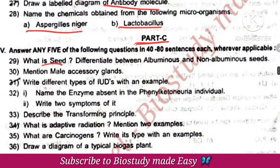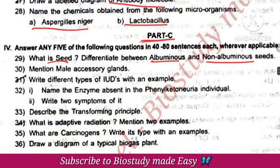Part C questions: What is a seed? Differences between albuminous and non-albuminous seeds. Male accessory glands include the seminal vesicle, prostate gland, and bulbourethral glands — I will tell you the functions.